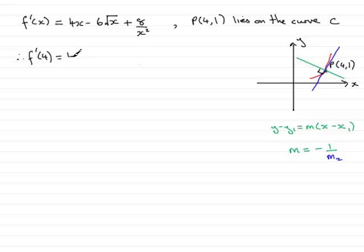So let's start by getting the gradient of the tangent at P. We do that by putting X is 4 into here. So we would have 4 times 4 minus 6 times the square root of 4 plus 8 over 4 squared. And if you work that out, the square root of 4 is 2. So we've got 4 times 4 is 16, take away 12, which is 4, plus 8 sixteenths. So that's going to be 4 and a half. I prefer actually to keep it top heavy. So 4 and a half is 9 over 2. Much better to keep fractions top heavy when doing this kind of work.